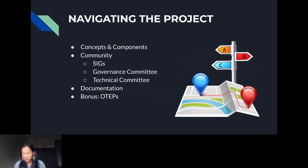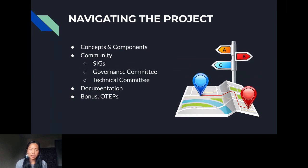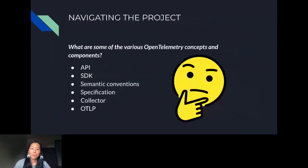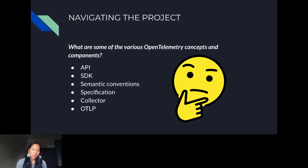Now we're moving into the section on navigating the project, where I'll go over core concepts and components: the community and some of its components, SIGs, governance committee, technical committee, and documentation. I'll also include a bonus section about OTEPs. OpenTelemetry has a lot of moving parts, so I want to break them down by answering the question: what are some of the various OpenTelemetry concepts and components? Understanding each will help cement your knowledge and enable you to effectively navigate the project.